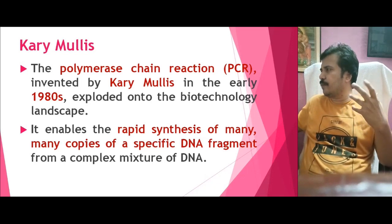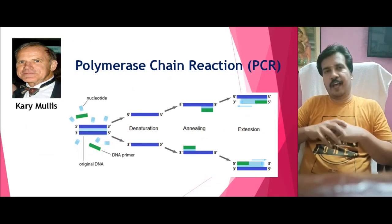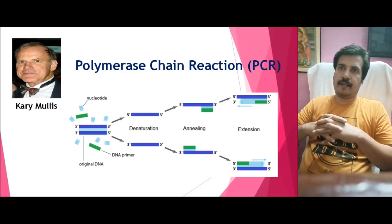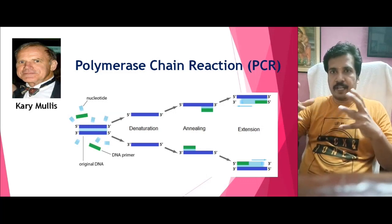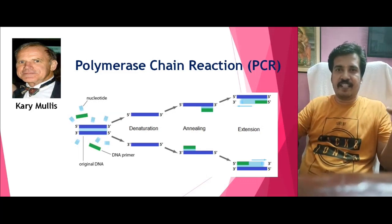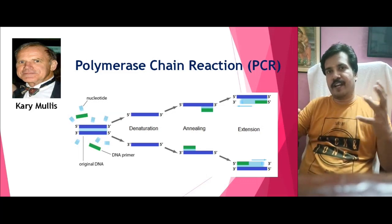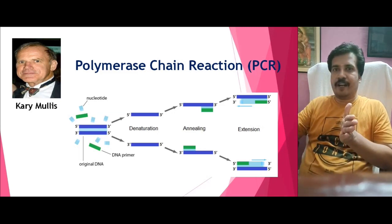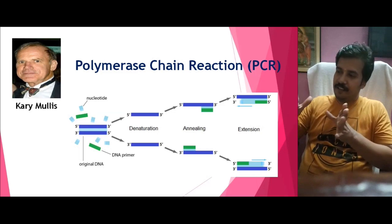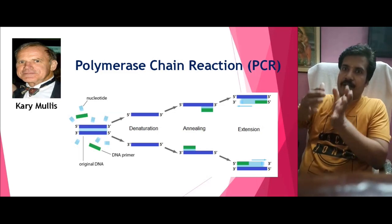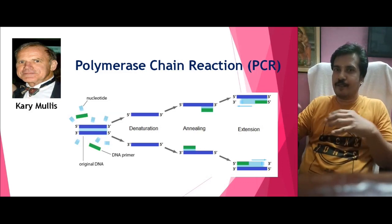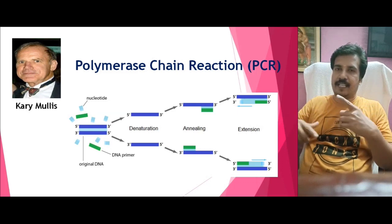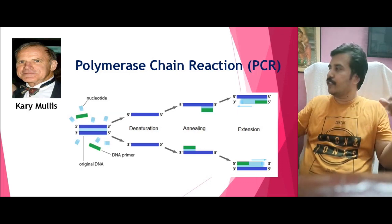PCR works as follows: starting with a double-stranded DNA, we add DNA polymerase (the replicating enzyme), then add dNTPs — ATP, CTP, GTP, and TTP. We apply specific temperature conditions for a set time duration to denature the DNA into two single strands. Primers then anneal with both strands, and each single strand becomes a template for synthesizing a new strand. So one double-stranded DNA molecule produces two double-stranded DNA molecules. If this process is repeated, we get an exponential increase in the DNA molecule.